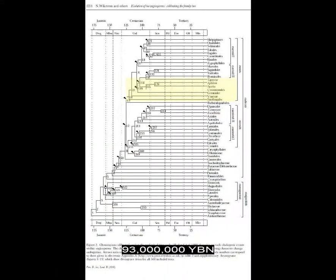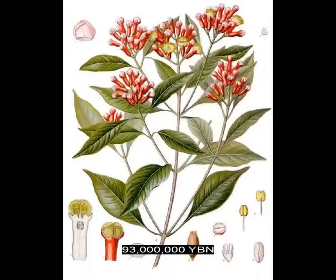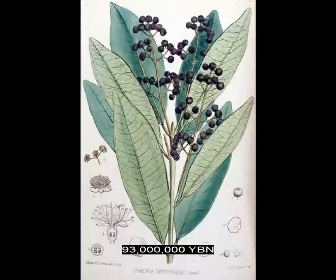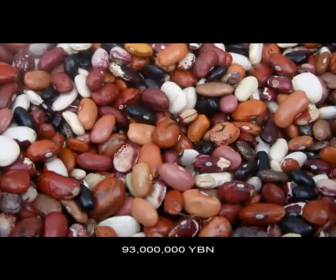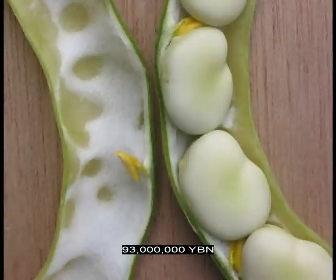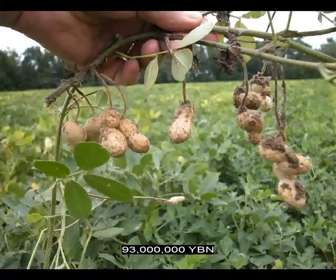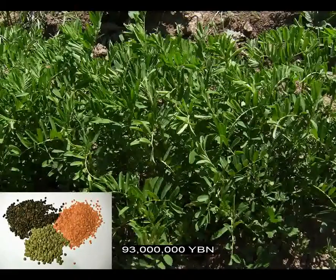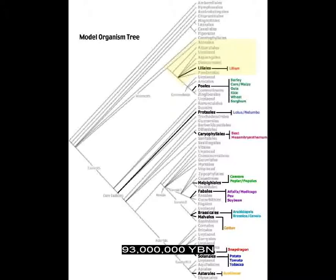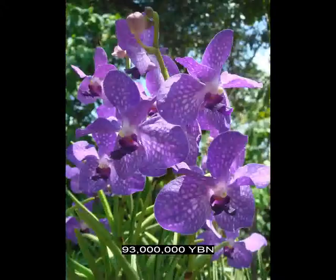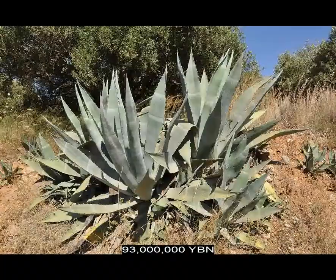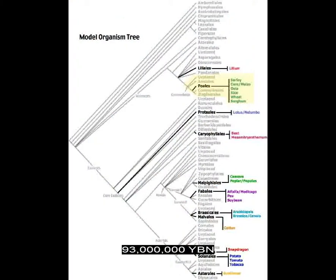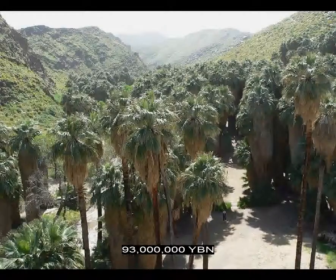Flowers Myrtales — pomegranate, clove, guava, allspice, eucalyptus. Flowers Fabales evolve — beans, pea, peanut, soy, lentil. Flowers basal monocots — vanilla, orchid, asparagus, onion, garlic, agave, aloe, lily. Monocots Commelinids evolve — palms, coconut, corn, rice, barley, oat, wheat, rye, sugarcane, bamboo, grass, pineapple, papyrus, turmeric, banana, ginger.